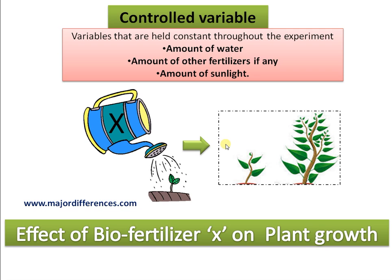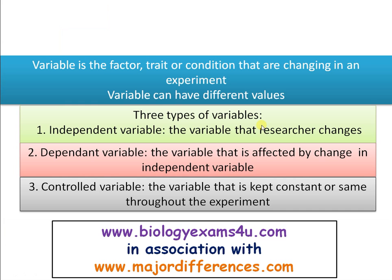Only then can we assess the exact effect of biofertilizer on plant growth. To summarize: a variable is a factor or condition that is changing in an experiment and can have different values. There are three types — the independent variable that the researcher manipulates, the dependent variable that is affected by that manipulation, and the controlled variable that is kept constant in all treatment and control groups throughout the experiment.